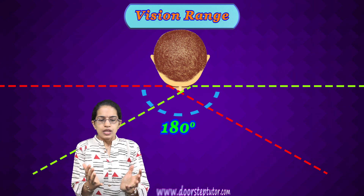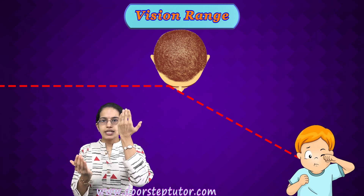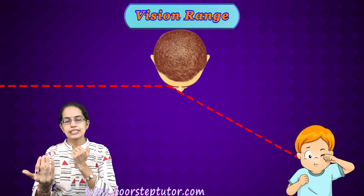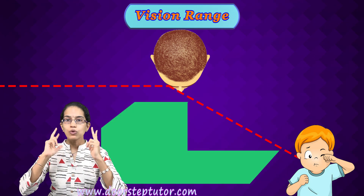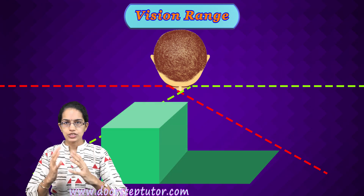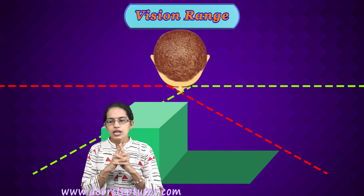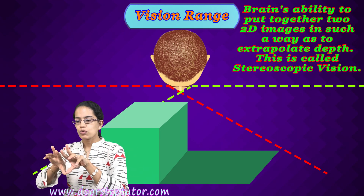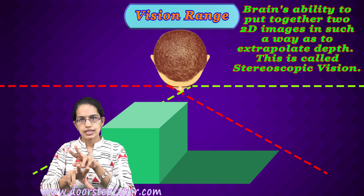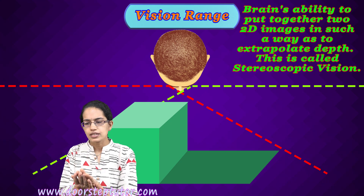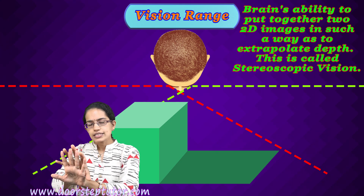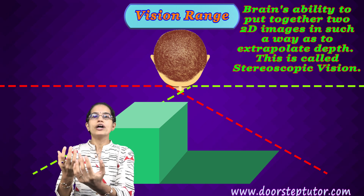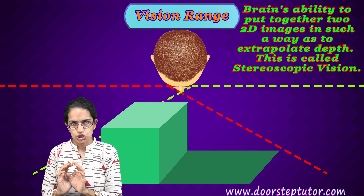If I shut one of the eyes and observe through one eye, the image formed is two-dimensional. With both eyes, you have a three-dimensional view because our brain combines those different images that are centimeters apart, and extra information is derived to give it a depth view or three-dimensional view.